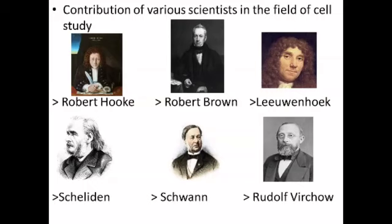What is cell theory? Cell theory was given by Schleiden and Schwann. The statements are: every living organism is made up of cell and cellular products; new cells arise from pre-existing cells by the process of cell division; and cell is the structural and functional unit of a living organism.